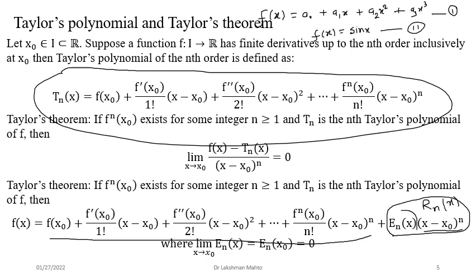So the limiting value of Rₙ is zero — that is generally what we call the remainder term after n terms. There are various explicit forms of Rₙ(x). One explicit form is given by Lagrange. We will discuss the remainder from the Lagrange perspective.